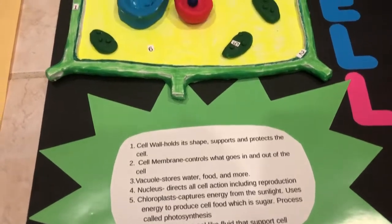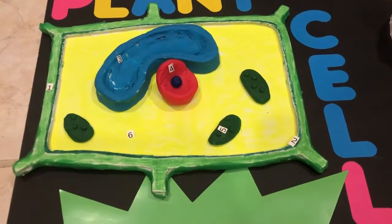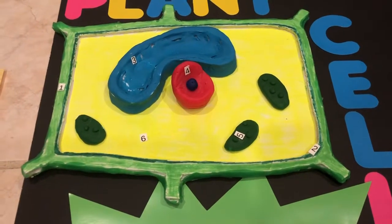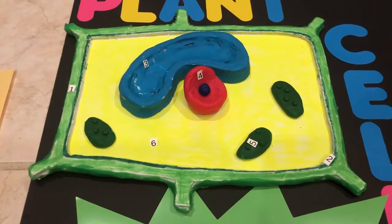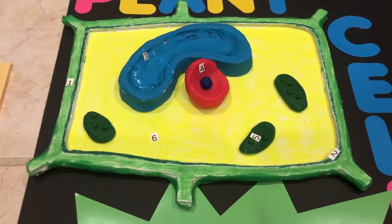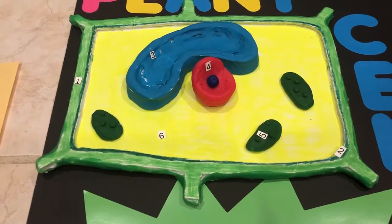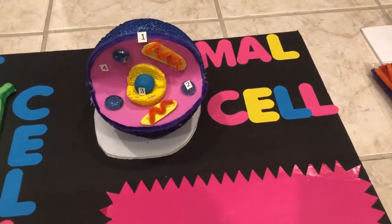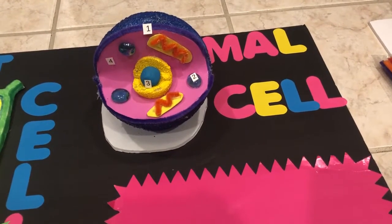What we used to create the plant cell was foam board from the Dollar Tree, play-doh that we already had, hot glue, and marker. We made everything out of foam board and then just wrapped it in play-doh.